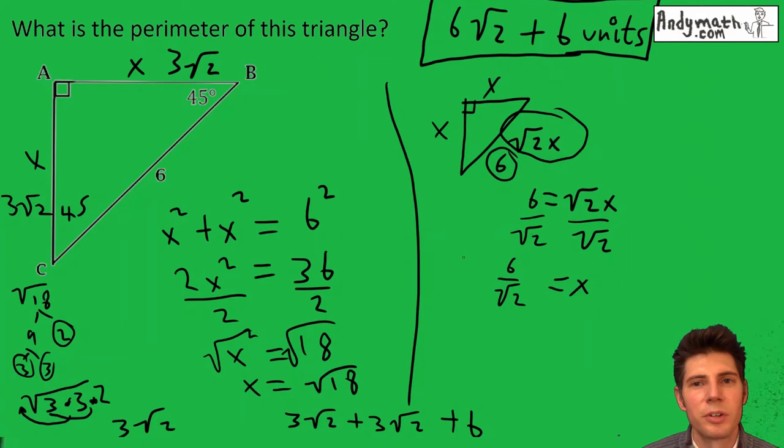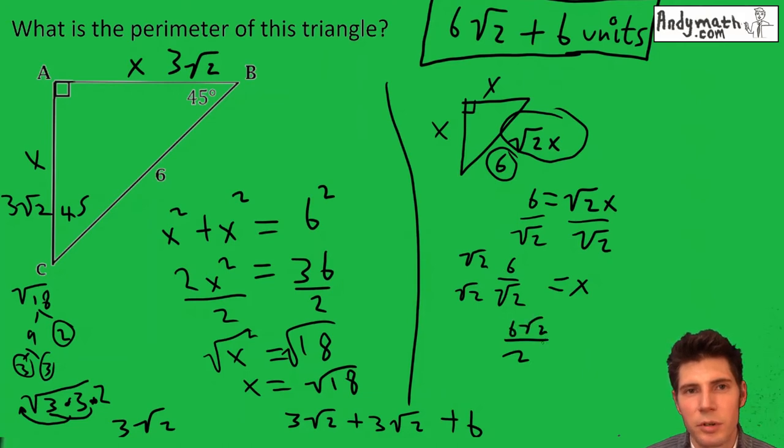Now we can't have something over a root, so we're going to multiply top and bottom by root two. Root two times root two is two, and six times root two is six root two. Then we can simplify: six divided by two is three, and we get x equals three root two.